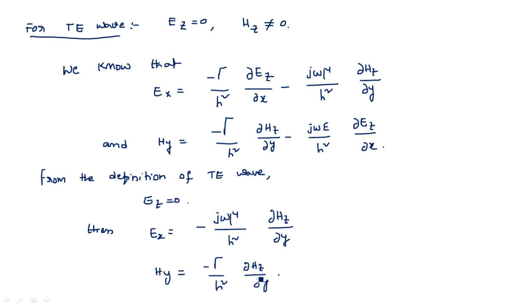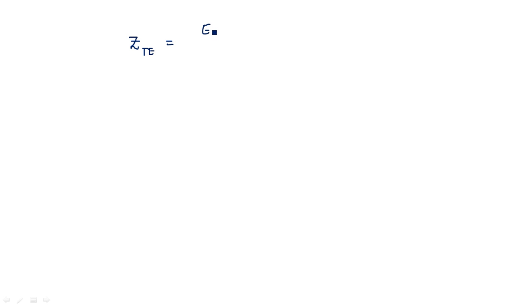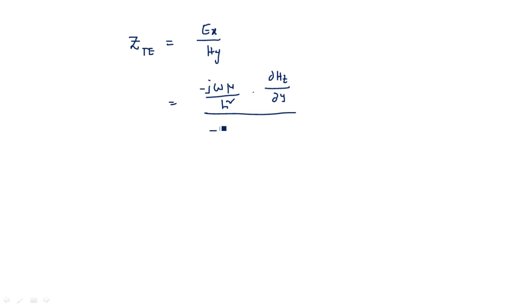The wave impedance Z for TE wave is Z_TE = Ex/Hy. Substituting the simplified expressions: Ex = (−jωμ/H²)(∂Hz/∂y) divided by Hy = (−γ/H²)(∂Hz/∂y). The H² terms cancel, the ∂Hz/∂y terms cancel, and the minus signs cancel, giving Z_TE = jωμ/γ.